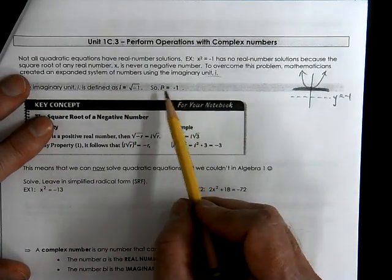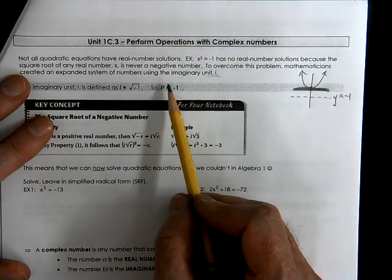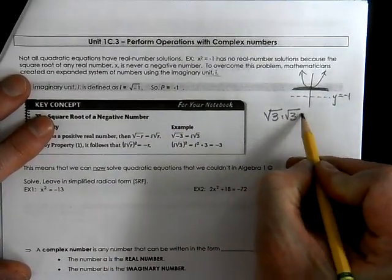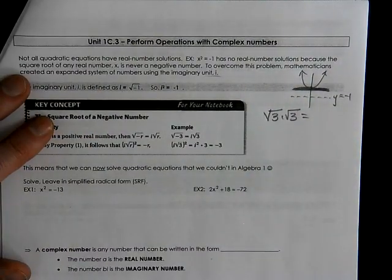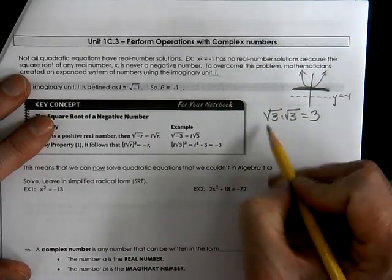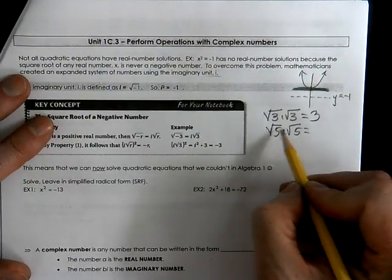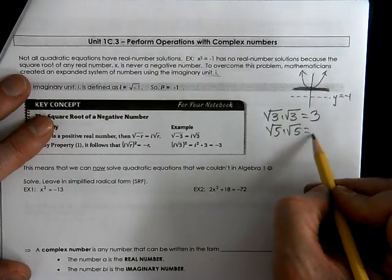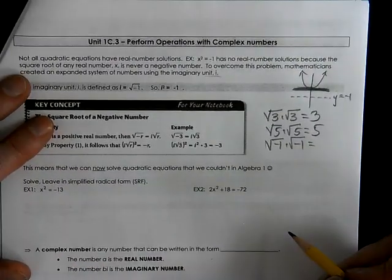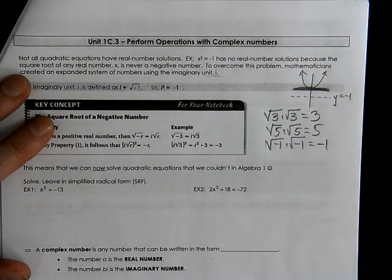At the same time, we're going to call i times i, that's i squared, equal to negative 1. Let's look at the numbers: root 3 times root 3 equals 3, root 5 times root 5 equals 5. When you square a square root, you get the value that's inside. So the square root of negative 1 times the square root of negative 1 equals negative 1, using all the same properties we have in the past.